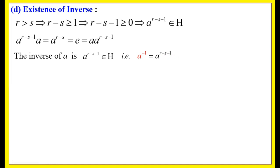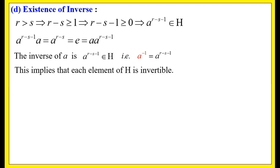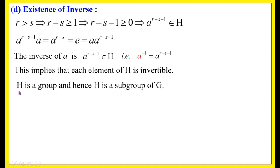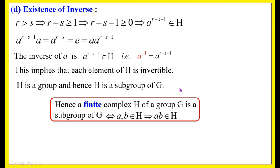Thus inverse exists for a. Since a is any arbitrary element in H, inverse exists for each and every element in H. This implies that each element of H is invertible. Therefore H is a group, and hence H is a subgroup of G.